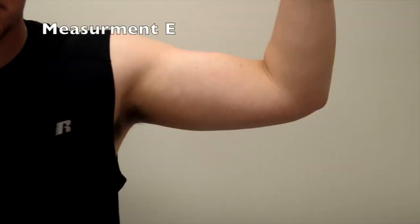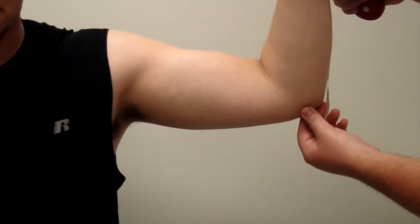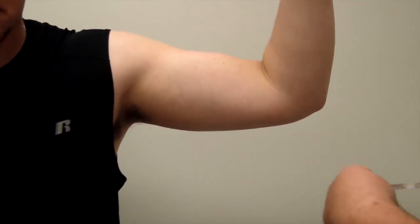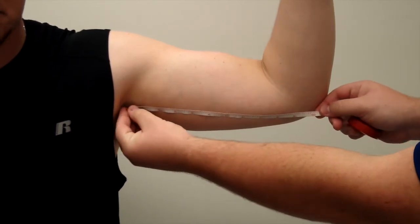Measurement E. Locate the axilla, or armpit, and the medial epicondyle. The medial epicondyle is the bony protuberance on the medial side of the elbow. Next, measure the distance between these two points.